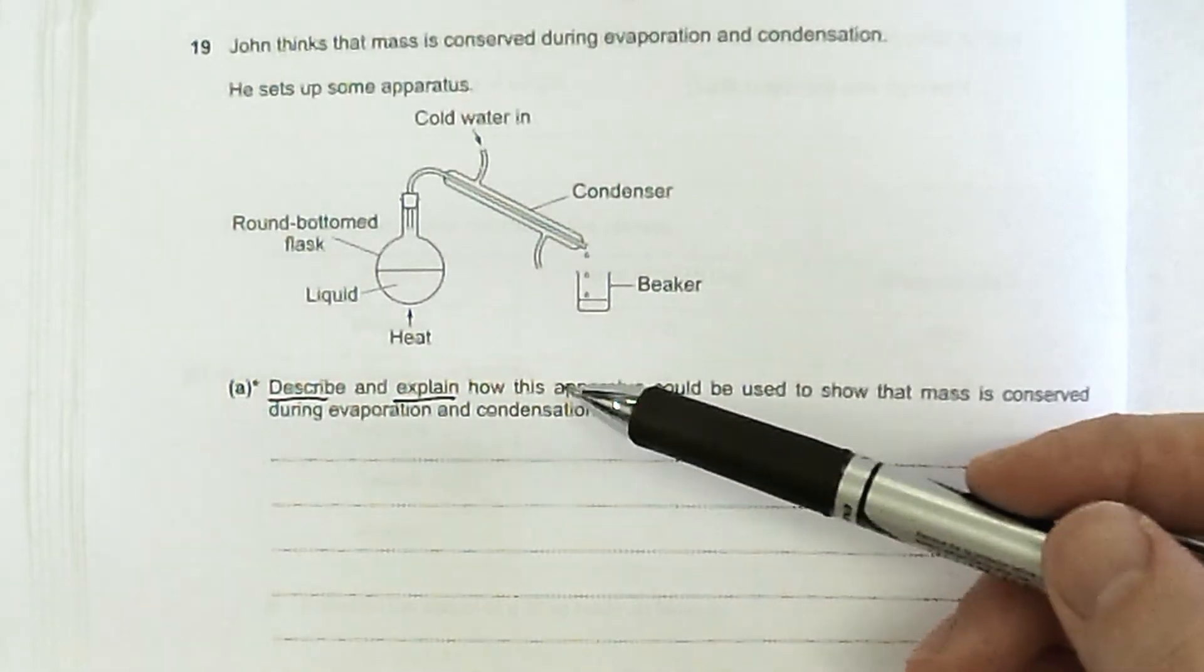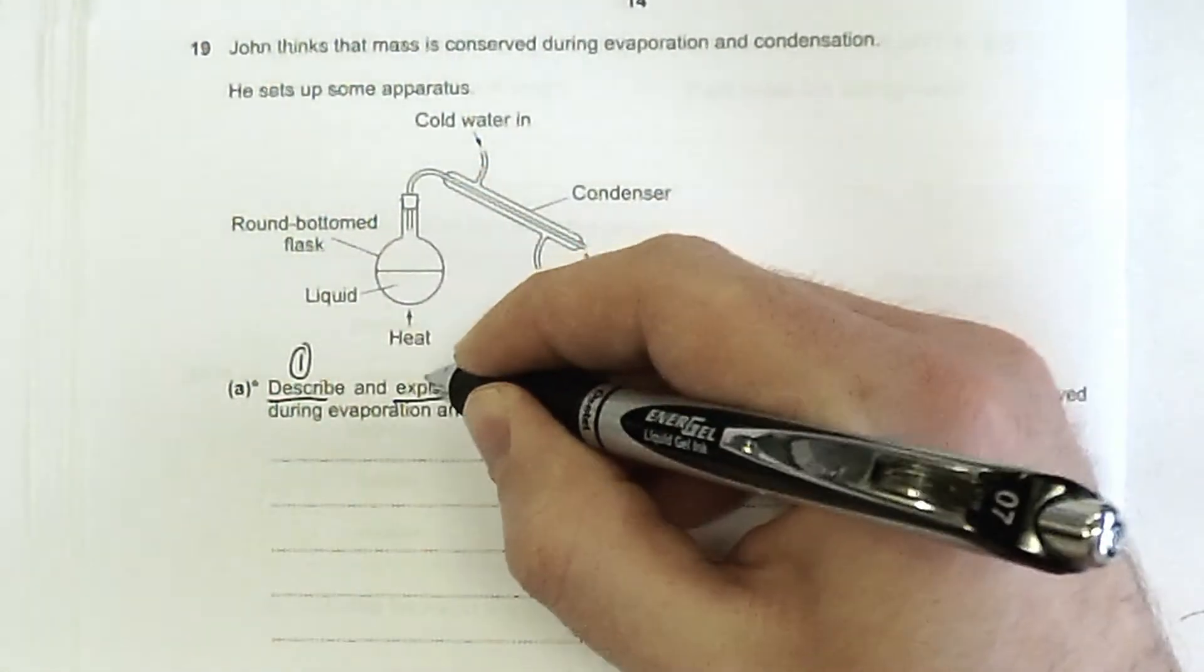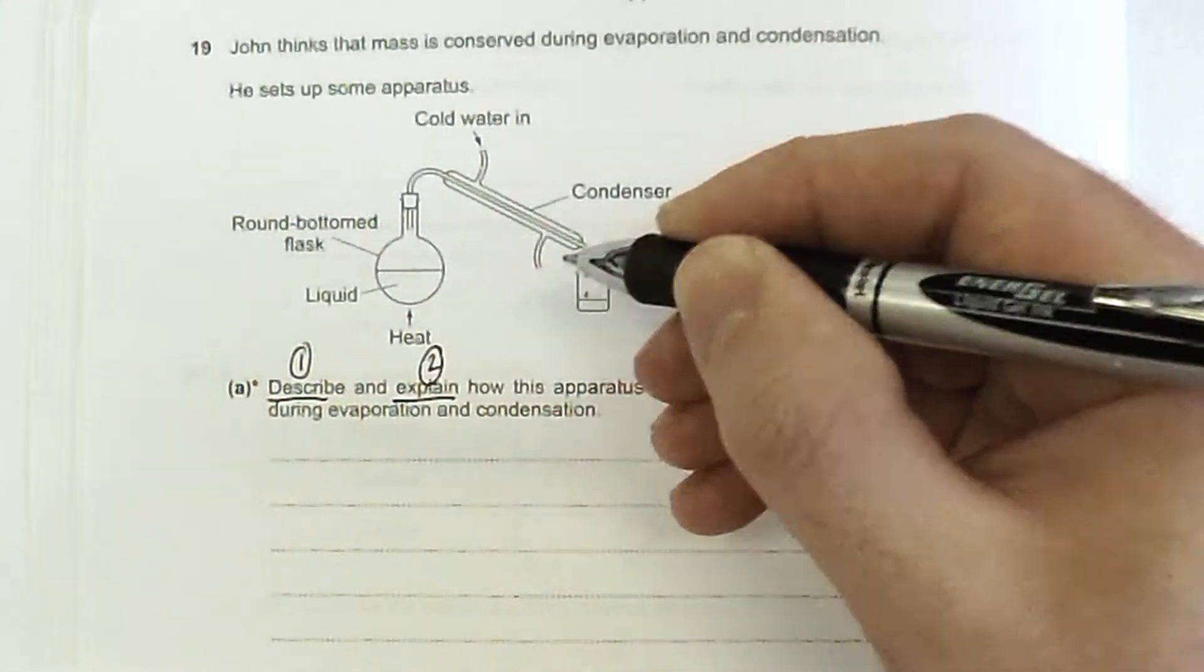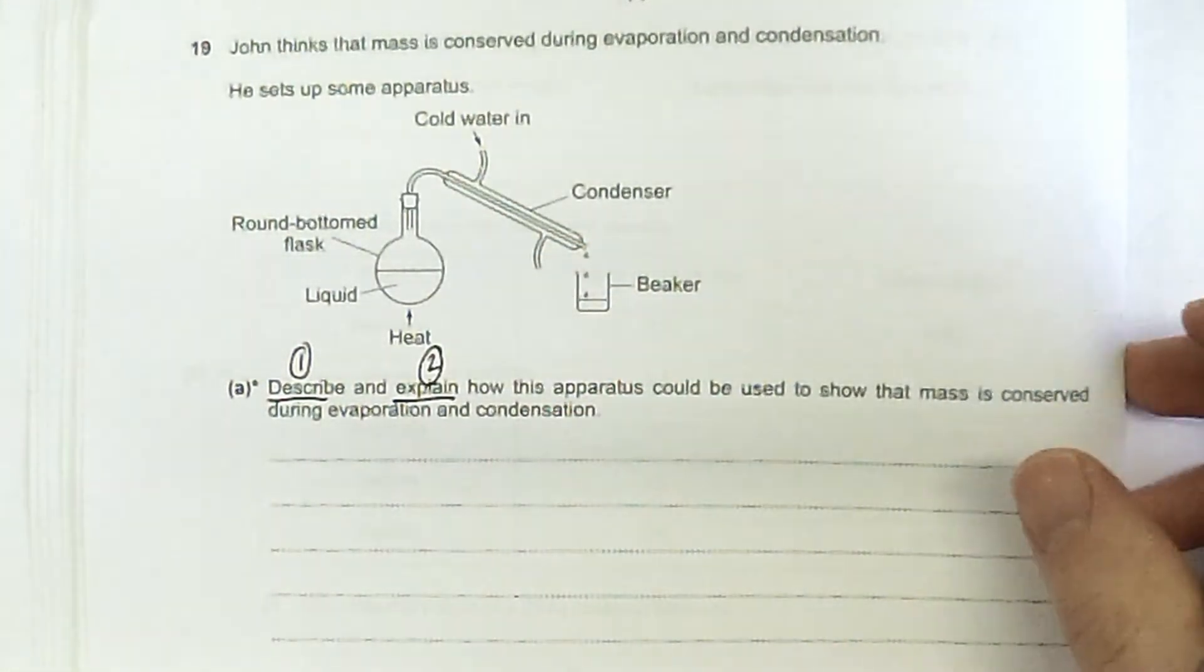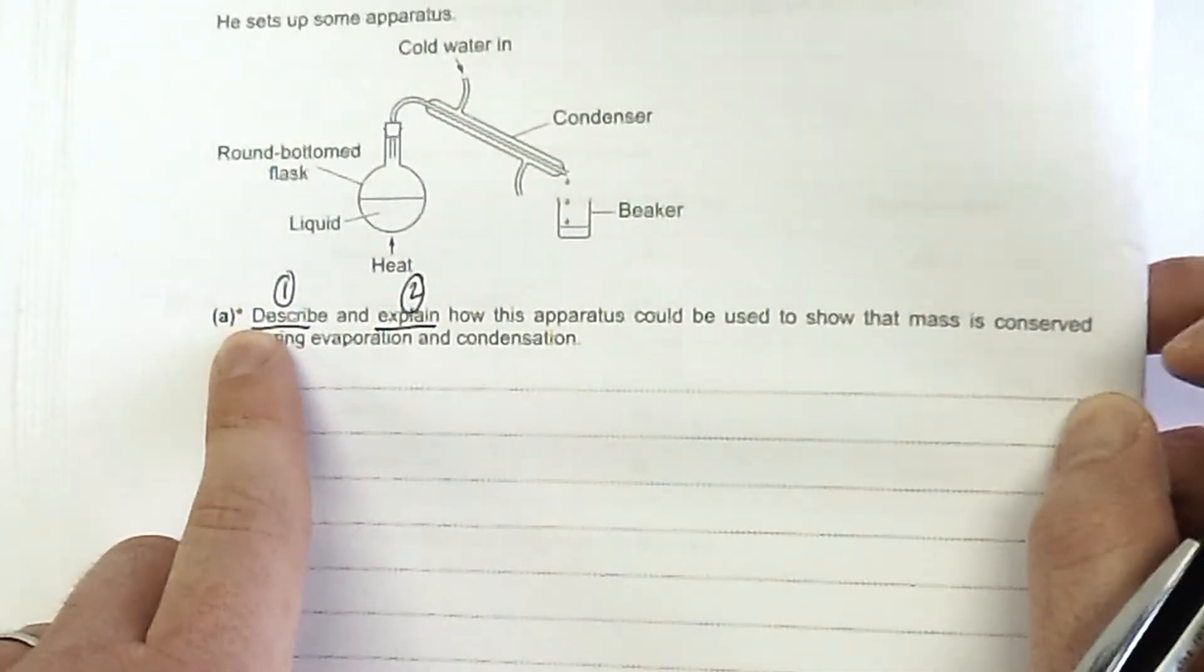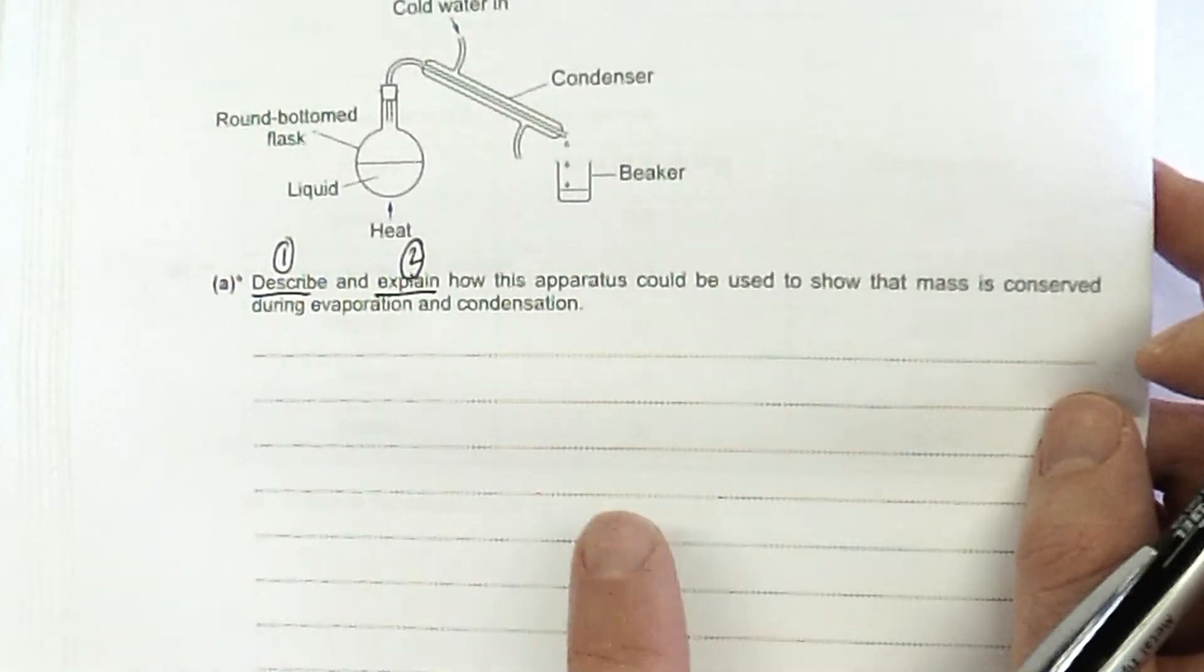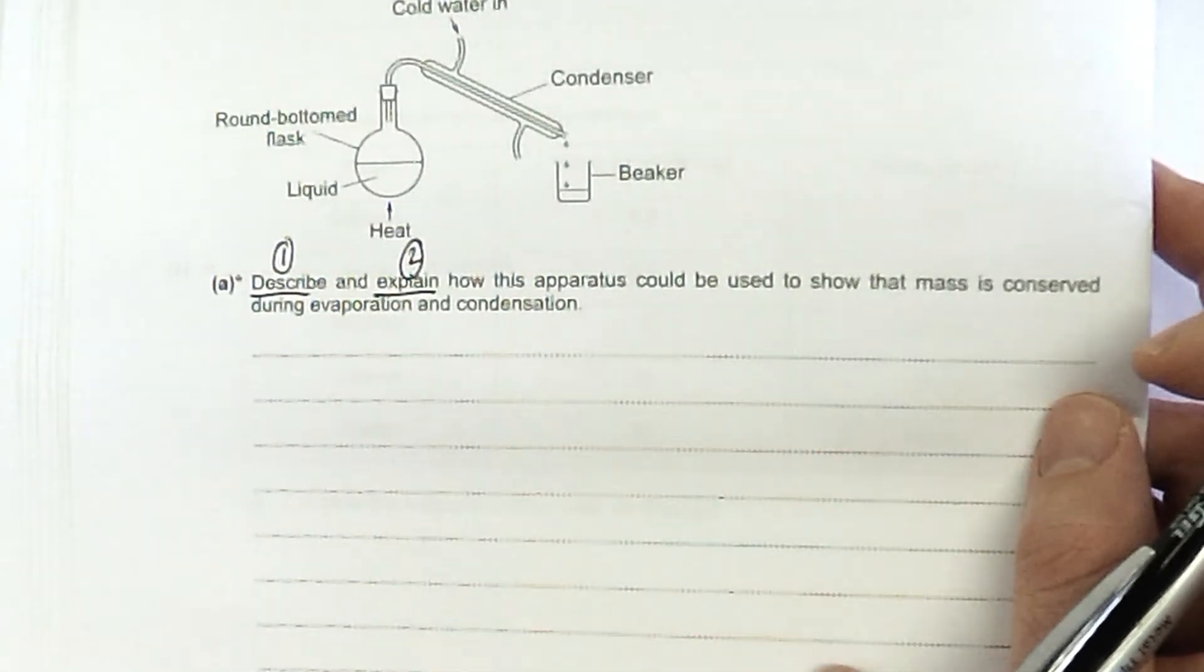I would encourage you to always use the question to think about your structure. I'm going to do a paragraph on describing what happens, and then a paragraph explaining how that shows mass is conserved. Always briefly think and plan what your structure is going to be like.